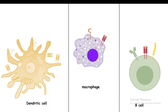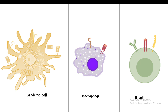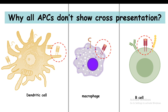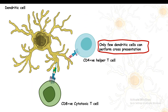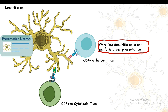One question is whether cross presentation is conserved across all antigen presenting cells or only in dendritic cells. It turns out this process is not conserved across all antigen presenting cells. Even among dendritic cells, only a minute subpopulation can cross present antigens — as if this small subpopulation has a license to cross present.